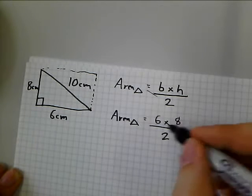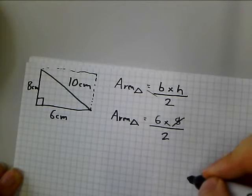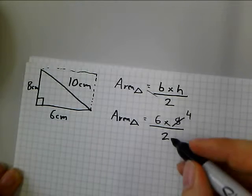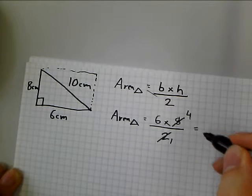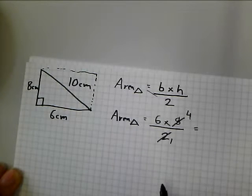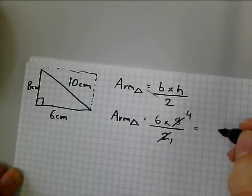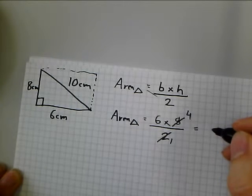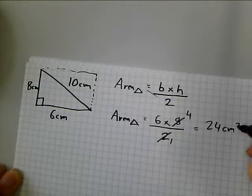So, it doesn't really matter which number you choose. I'm going to choose the 8. So, this 8 can be divided by 2 and I get 4. And that 2 can be divided by 2 and I get 1. So, it's going to be 6 times 4 divided by 1. Divided by 1 makes the numbers stay the same. So, 6 times 4, 24, 24 centimeters squared.